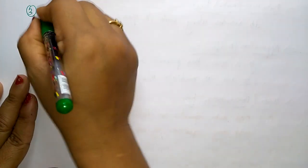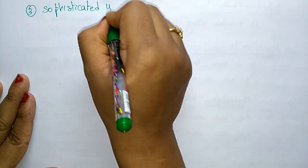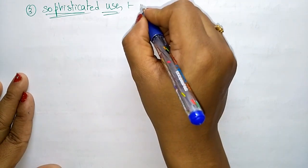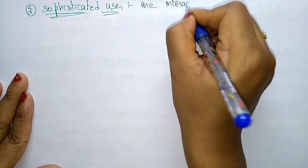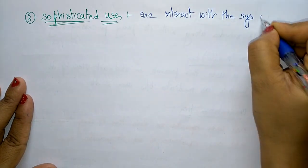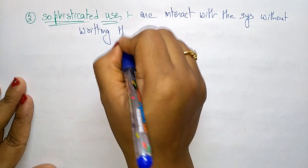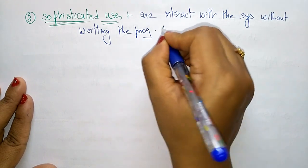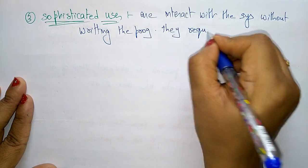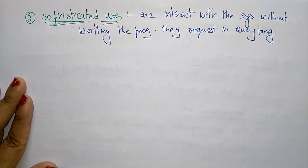Next is the sophisticated user. Who do you call a sophisticated user? The user who interacts with the database only with queries — those are the sophisticated users. Sophisticated users interact with the system without writing programs. They request only with the help of a query language. They won't write programs to interact with the database.